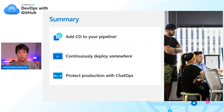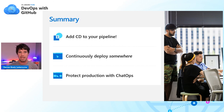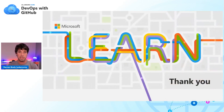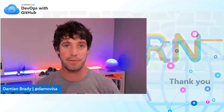Quick summary: we added continuous delivery and continuous deployment to our pipeline. I think it's really important to continuously deploy somewhere, even if it's not production. And chat ops is a great way of protecting our production environment. Thanks so much for watching — if we've got time for Q&A that'd be great, otherwise I'll stick around and answer questions in the chat.